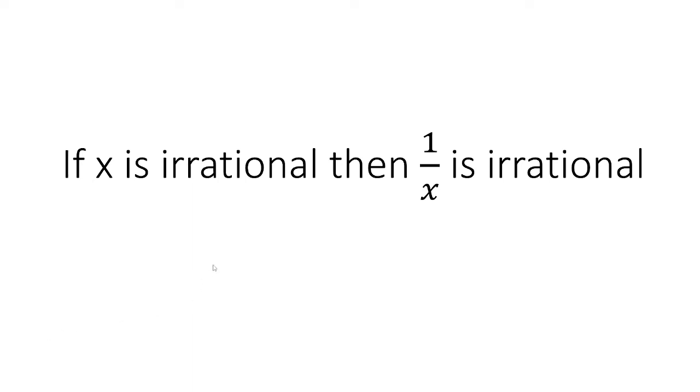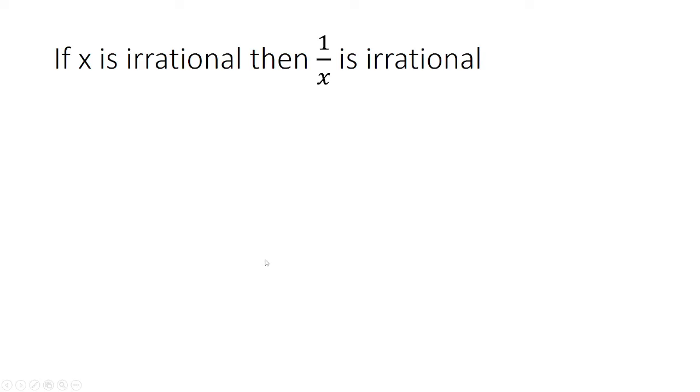We want to prove that if x is irrational, then 1 over x is irrational. The way we're going to prove this is by the contrapositive.